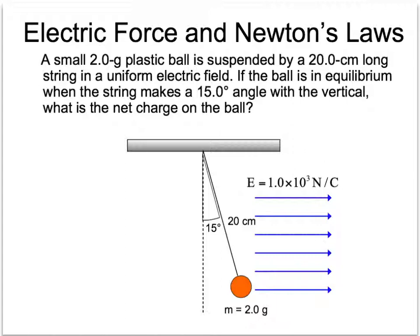Let's take a look at this first problem. A small 2 gram plastic ball is suspended by a 20 centimeter long string in a uniform electric field. If the ball is in equilibrium—now that word should make your brain think, okay, up equals down, left equals right, forces in equilibrium. If the ball is in equilibrium when the string makes a 15 degree angle with the vertical, what is the net charge on the ball?